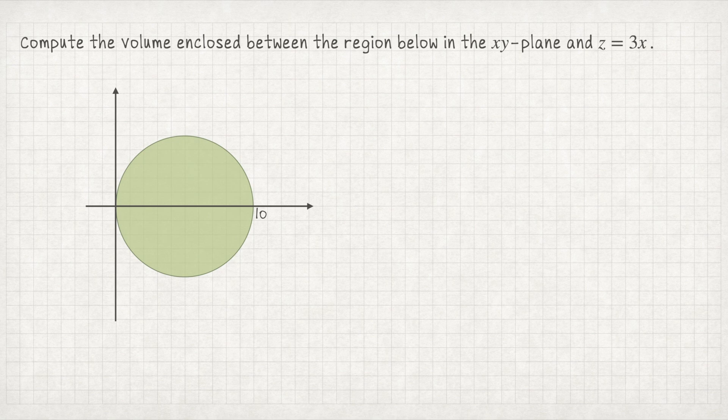In this video, we're going to compute the volume enclosed between the region pictured here in the xy-plane and the surface z equals 3x, which is not pictured. To set up this computation, let's first identify the region that we're looking at in the xy-plane. This green shaded area is a circle centered at (5, 0) with a radius of 5, so the equation of this circle is (x − 5)² + y² = 25.